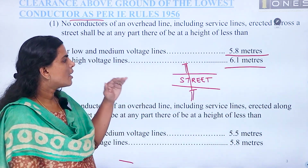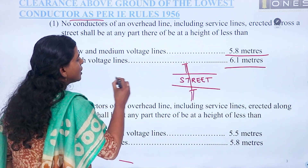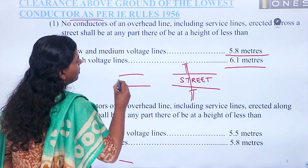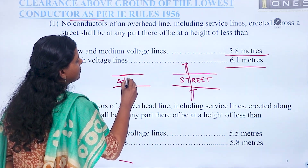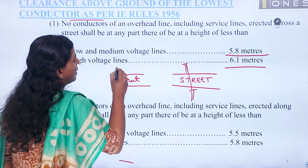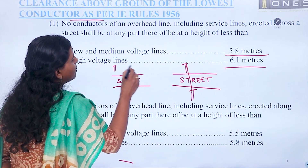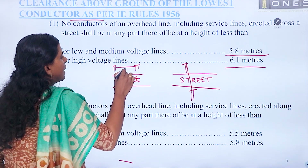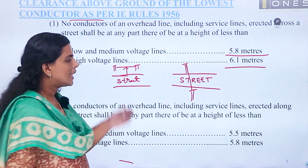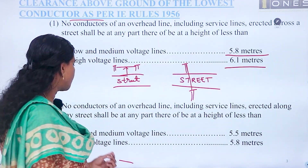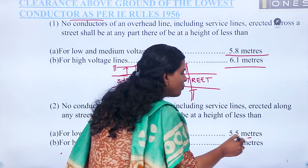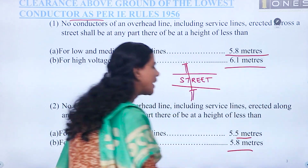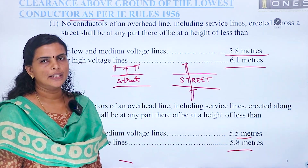If the lines are along the street — here is a pole, here is a pole — along the street, with respect to ground, the clearance should be at least 5.5 meters for low and medium voltages. And for high voltages, it should be at least 5.8 meters.